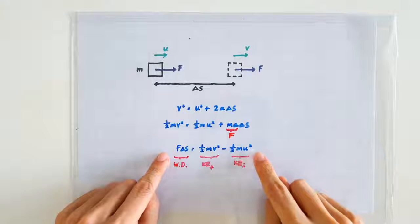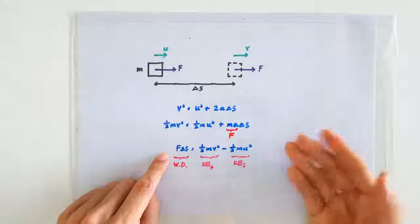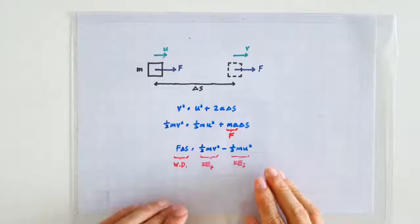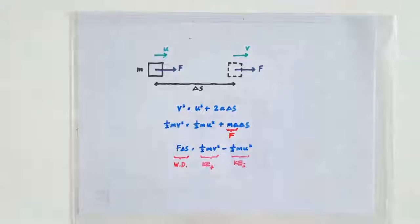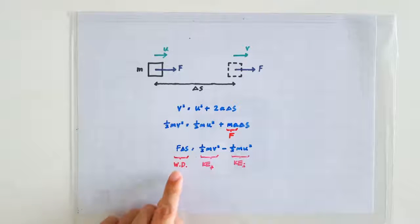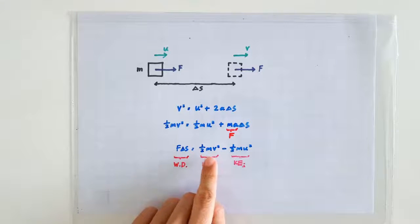Aha! This is the line that provides the inspiration for us to formulate the relationship between work and energy. F times delta s is going to be called the work done by the force F, and half m times the speed squared is going to be the formula for the kinetic energy.